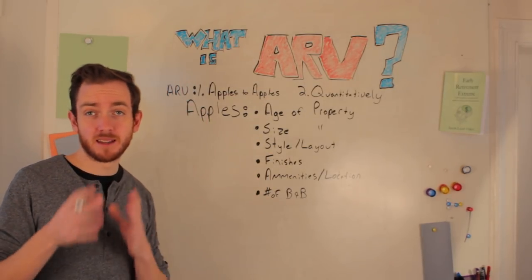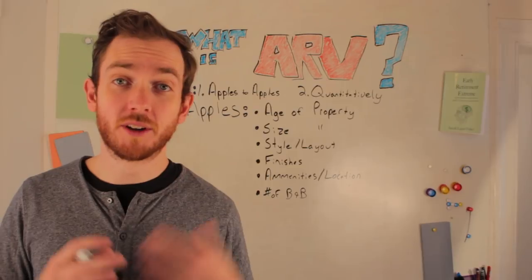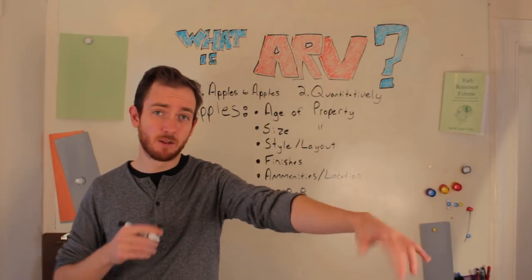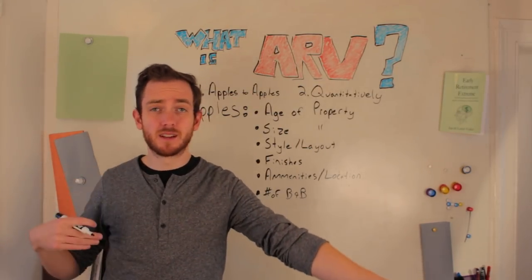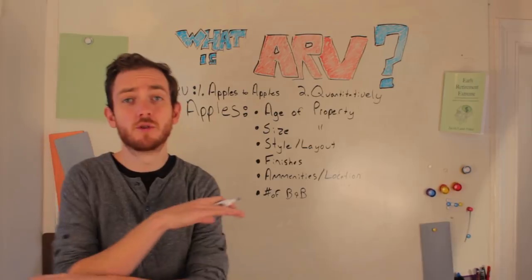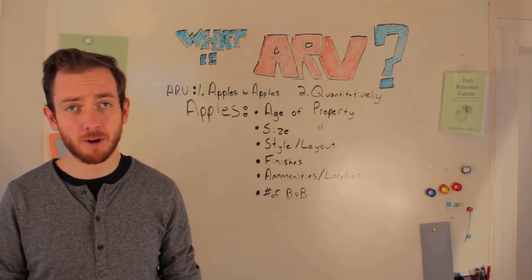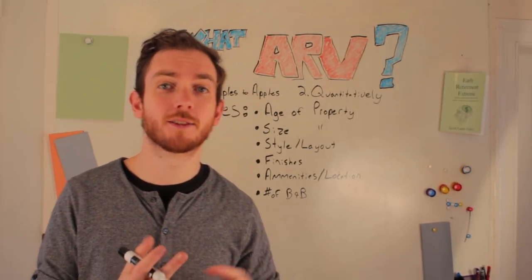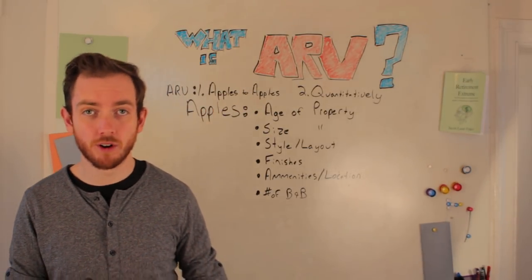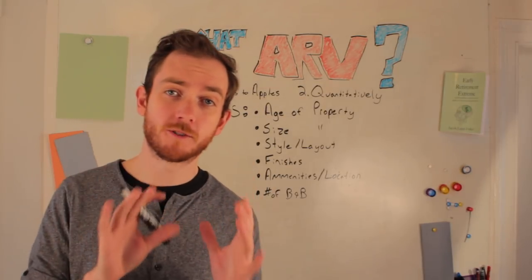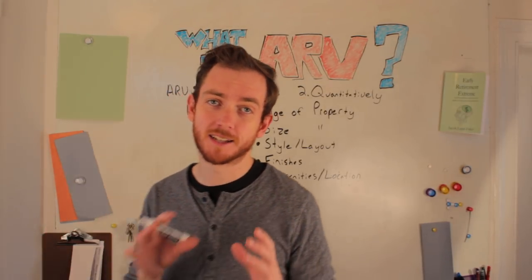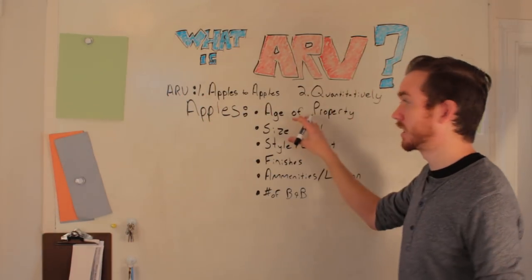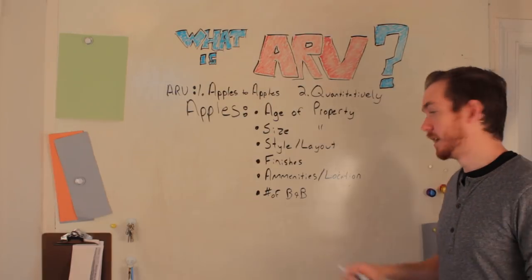You're also going to be looking at amenities and location. It doesn't make sense to compare a property on the very south end of the city with the very north end of the city — they're two completely different neighborhoods. The same thing goes for the wrong side of the tracks, the wrong side of the river, or the wrong side of the highway. All those factors need to be taken into consideration when getting an apples-to-apples comparison.